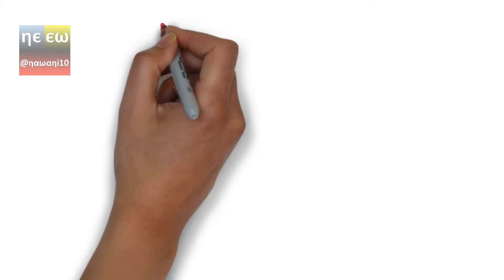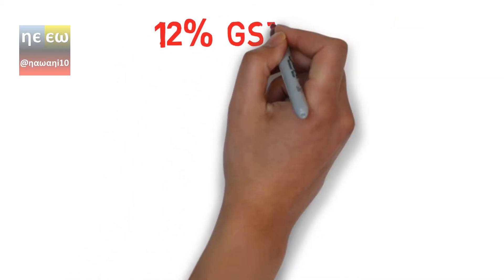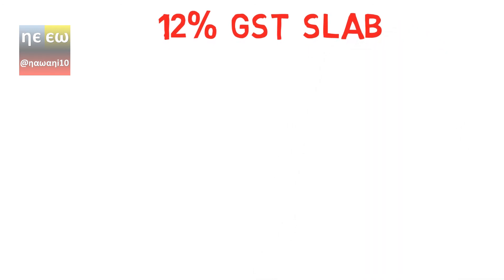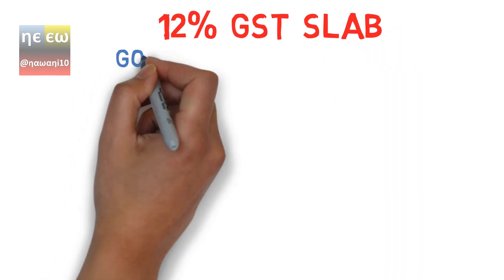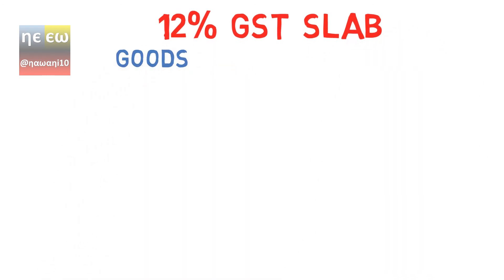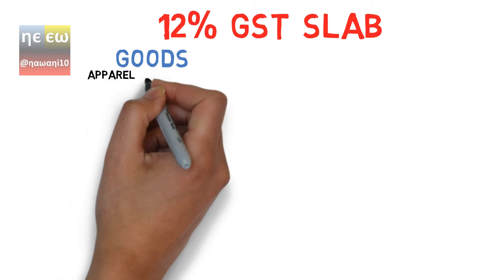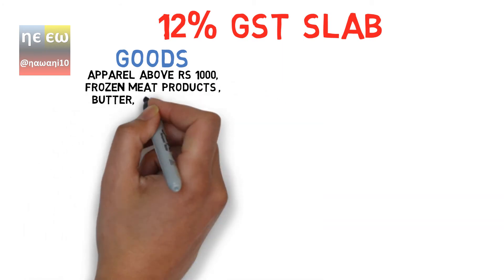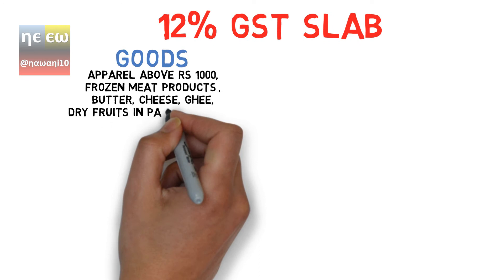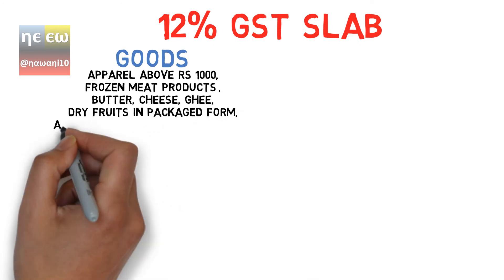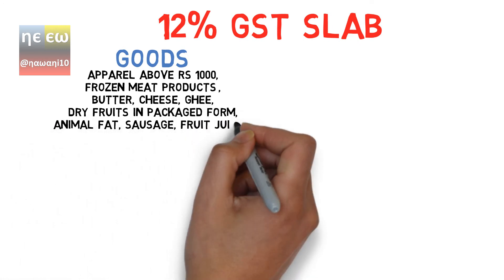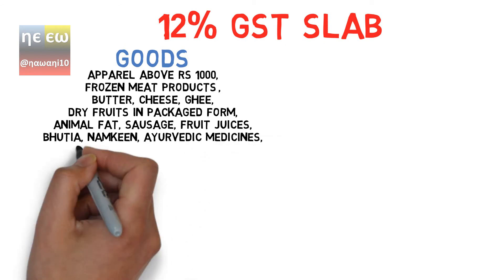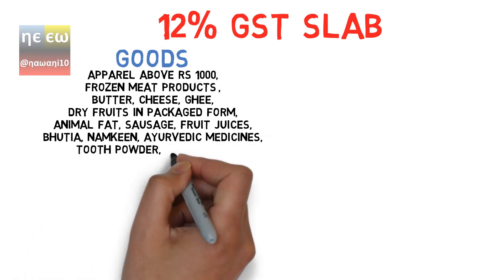In the 12% GST slab, 12% tax will be imposed on the following goods and services.